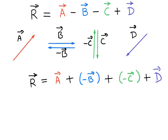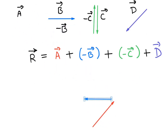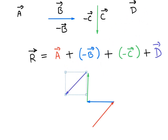Now let's add the four vectors: vector a, negative b vector, negative c vector, and vector d. First we take vector a, then negative b vector, then negative c vector, and finally vector d. The r vector starts from the tail of vector a up to the head of vector d — this is our r vector.